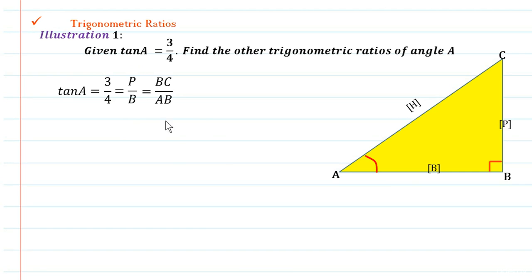Actually BC upon AB has the ratio equal to 3 upon 4. This means that BC is equal to 3k, that is the length of BC is equal to 3k, and the length of AB is equal to 4k. With the help of this ratio which was given to us, we have calculated the length of the two sides BC and AB.